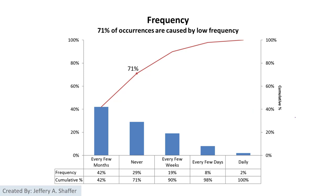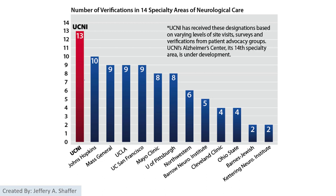This is another example where we synchronize both axes to show how the chart will look. Here is also another example of a bar chart created by UCNI — the University of Cincinnati. The idea is to show that UCNI has 13 verifications in 14 specific areas, making it one of the best in the top position.